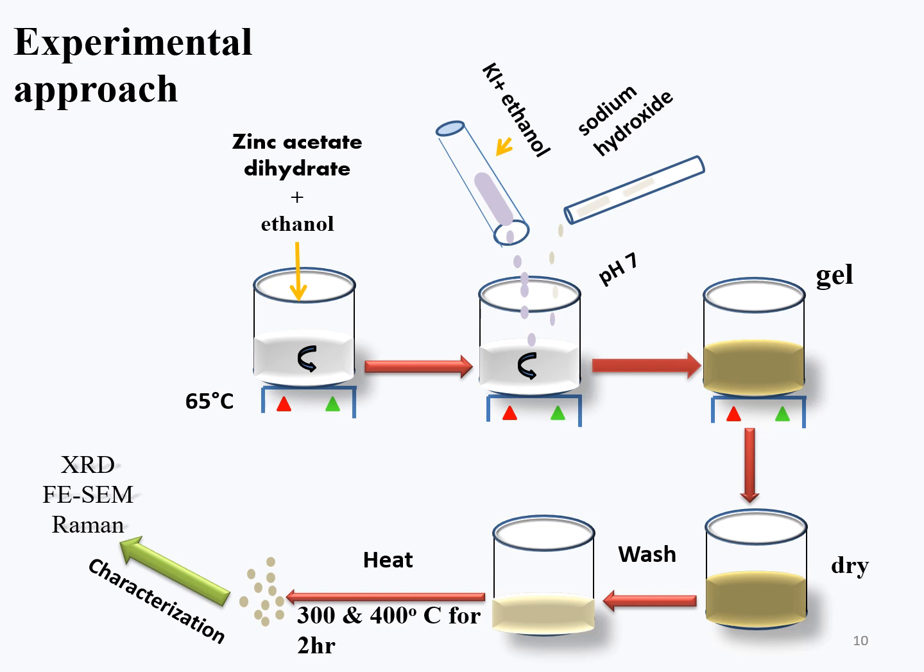The samples were prepared by dissolving zinc acetate dihydrate in ethanol and stirred at 65 Celsius for 2 hours to get a transparent solution. Potassium iodide was also dissolved separately in ethanol, then it was added to the zinc solution. The obtained solution was maintained at pH 7 by adjusting the amount of sodium hydroxide, then stirred again at 65 Celsius for 2 hours to obtain a homogeneous gel.